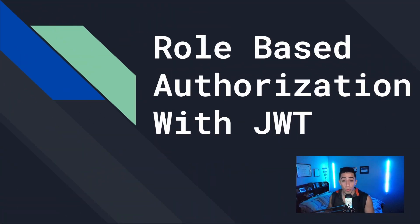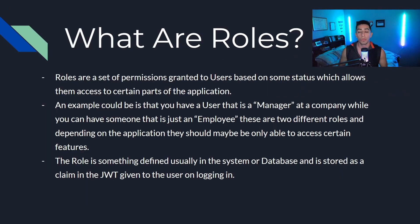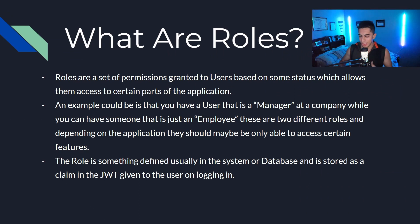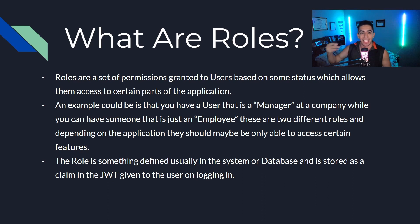Now let's dive into what are roles, how they are different than policies, and also how they work and are stored in a JWT. Roles are a set of permissions granted to users based on some status which allows them to access certain parts of an application based on that given role.